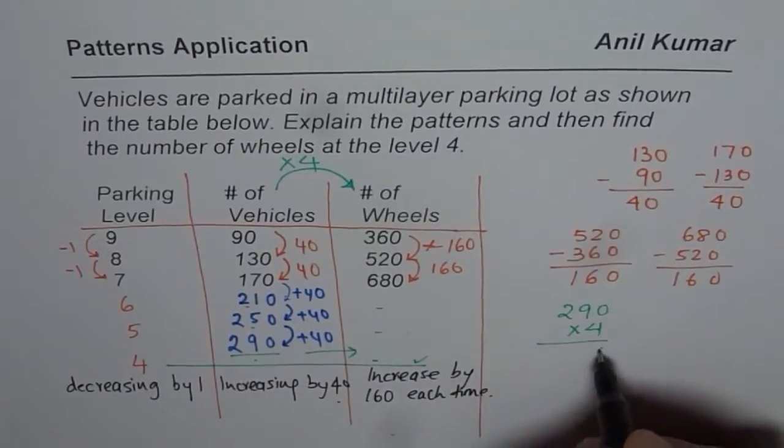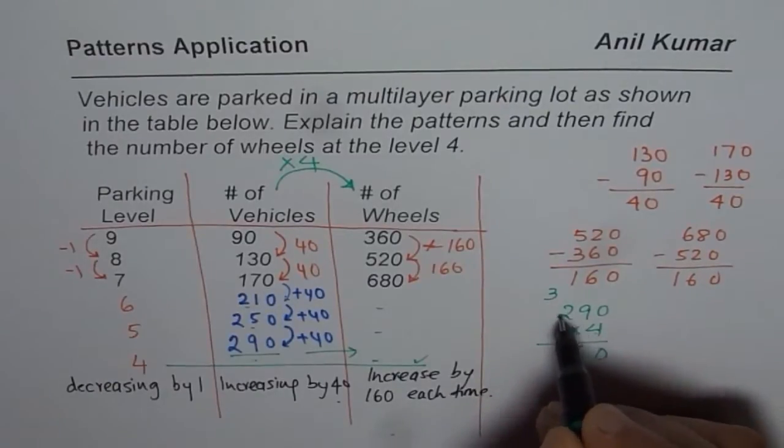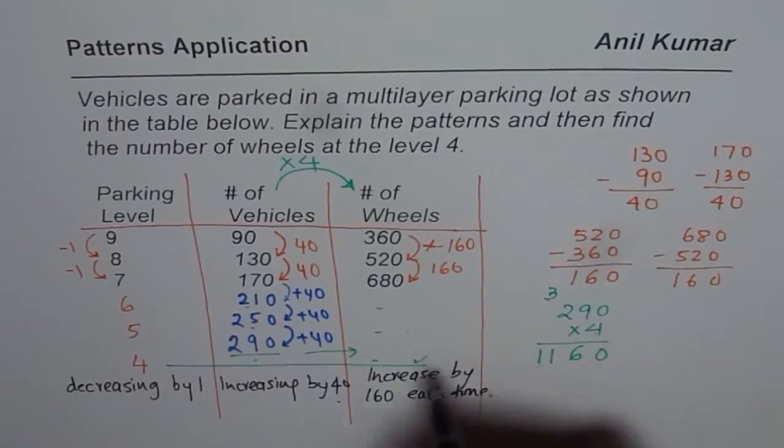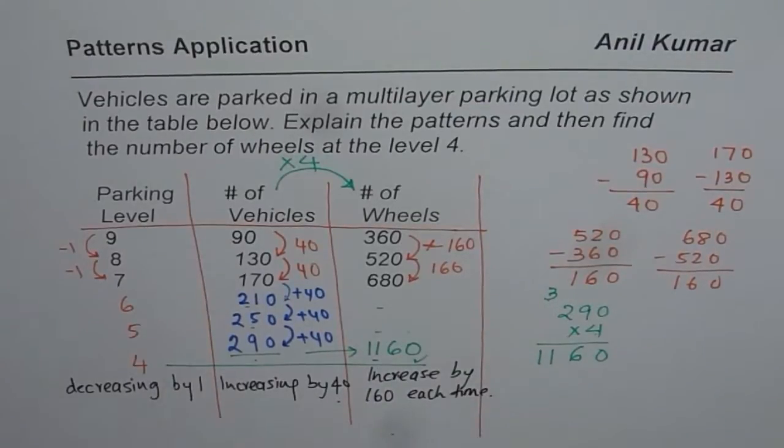So it's 0. 4 times 9 is 36. 4 times 2 is 8. 9, 10, 11. 1160 is our answer. So this is one way of finding number of wheels at level 4.